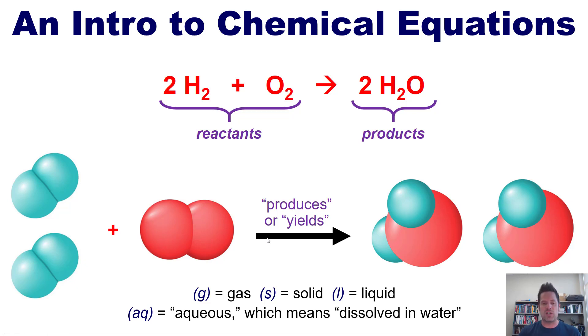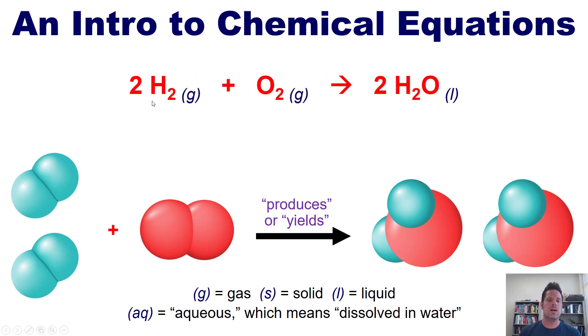So if we wanted to rewrite this equation properly, indicating all of those physical states, it would look like this. We have two molecules of hydrogen gas reacting with one molecule of O2 gas. See the little g's here? And that would yield or produce two molecules of H2O liquid. So this is our chemical equation with reactants and products and all of the physical states listed.